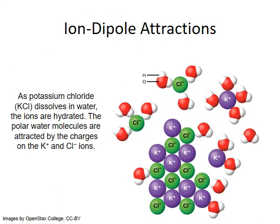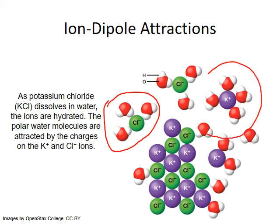The strongest intermolecular attractions occur between dissociated ions and polar molecules. A classic example is the dissolving of an ionic compound like potassium chloride in water. The positively charged end of each water molecule, associated with the hydrogen atom, is attracted to the full negative charge of the chloride ion. While the negatively charged portion of the water molecule, associated with the oxygen atom, is attracted to the full positive charge of the potassium ions. Each ion attracts multiple water molecules, which surround the ions and make it easier to separate them from each other.